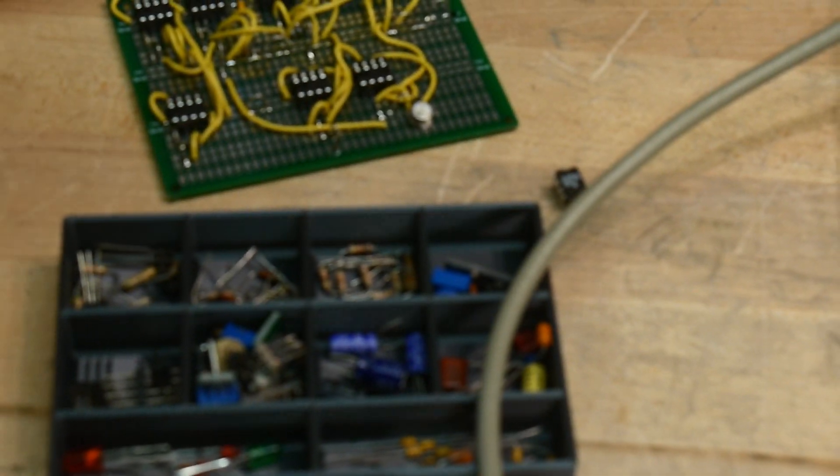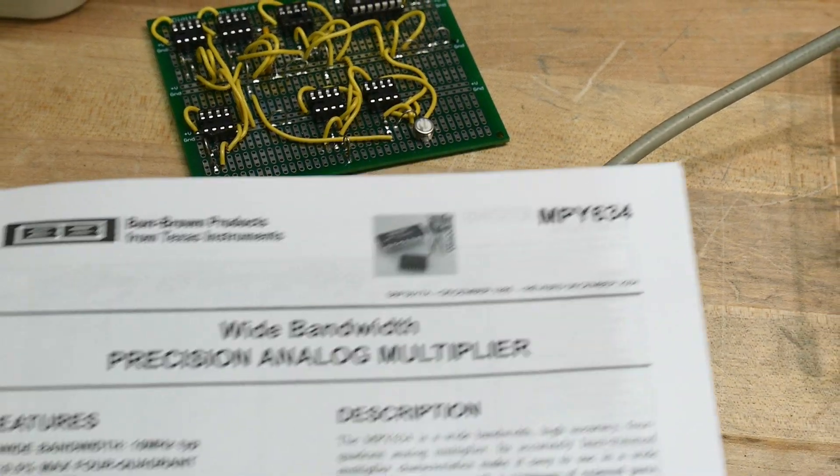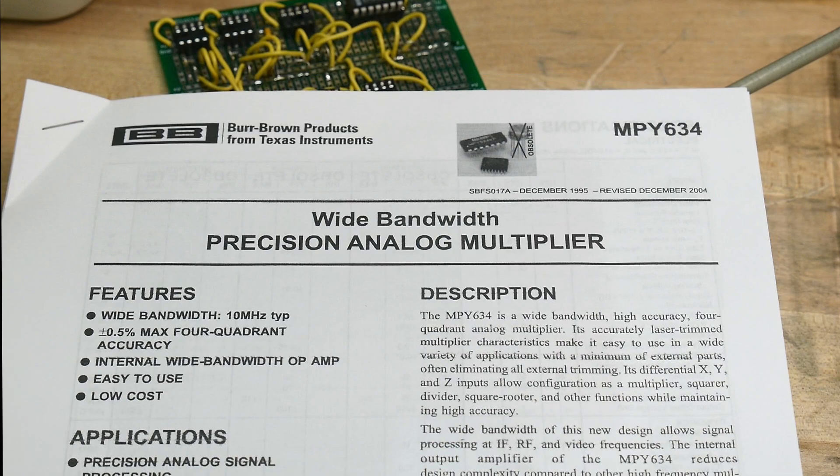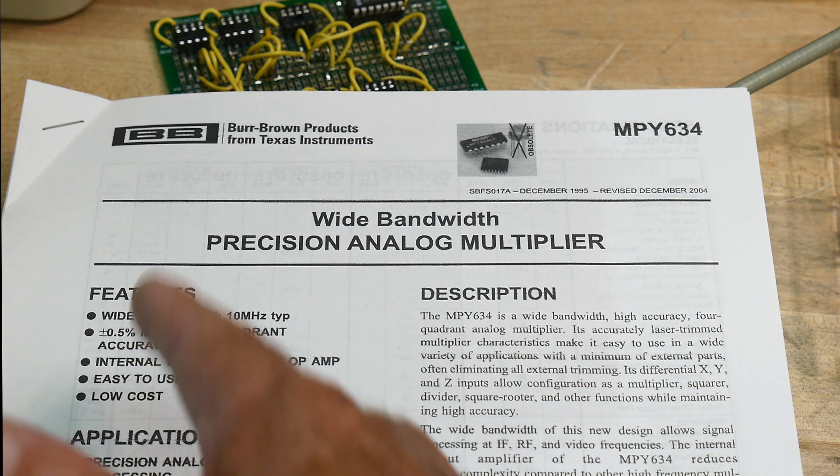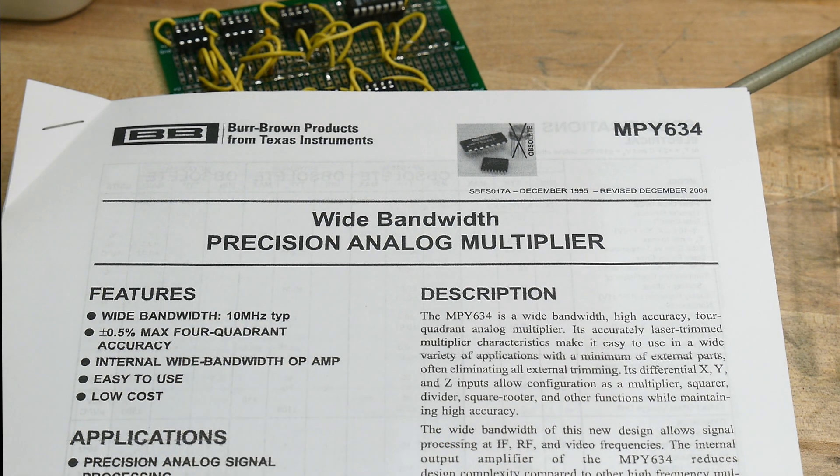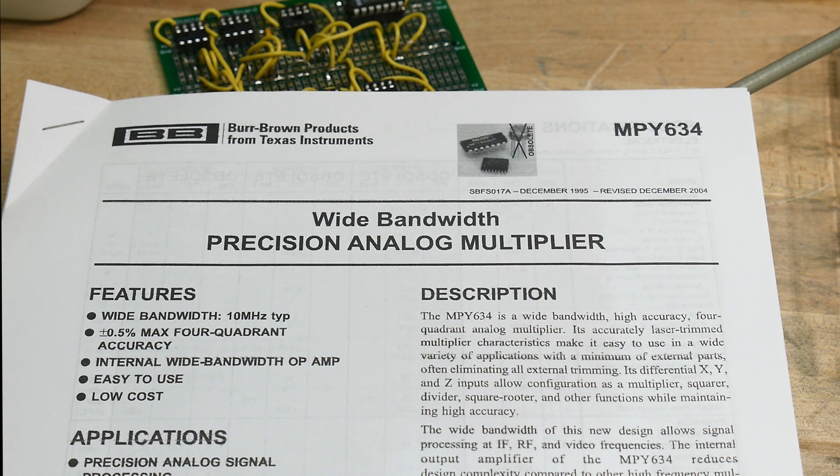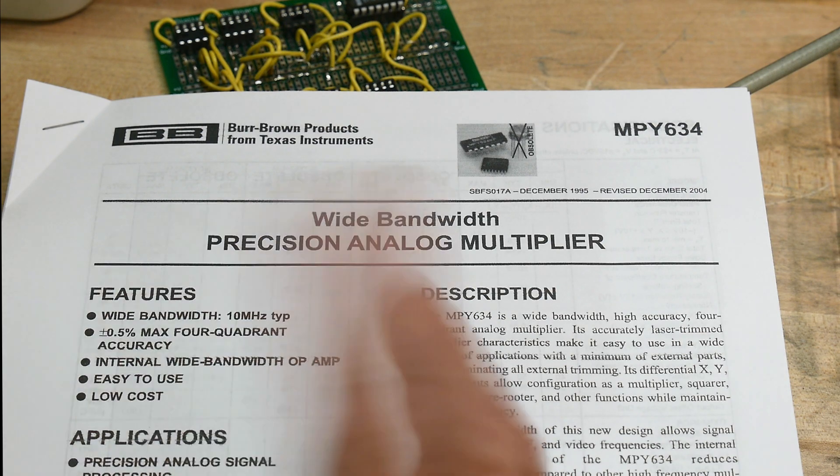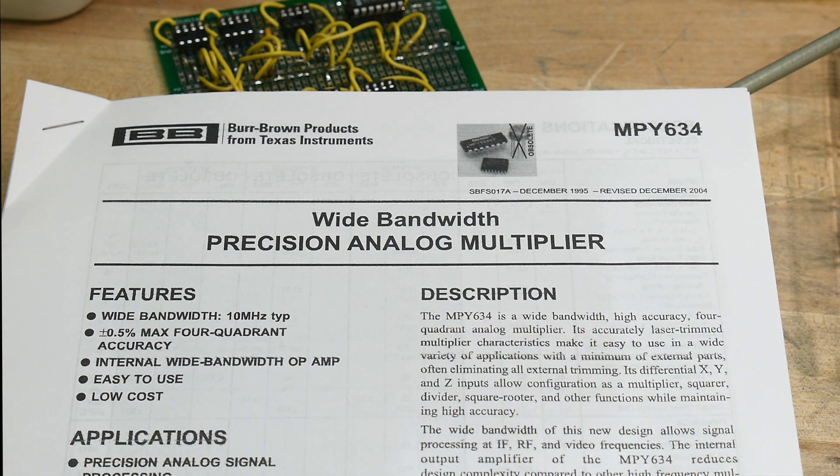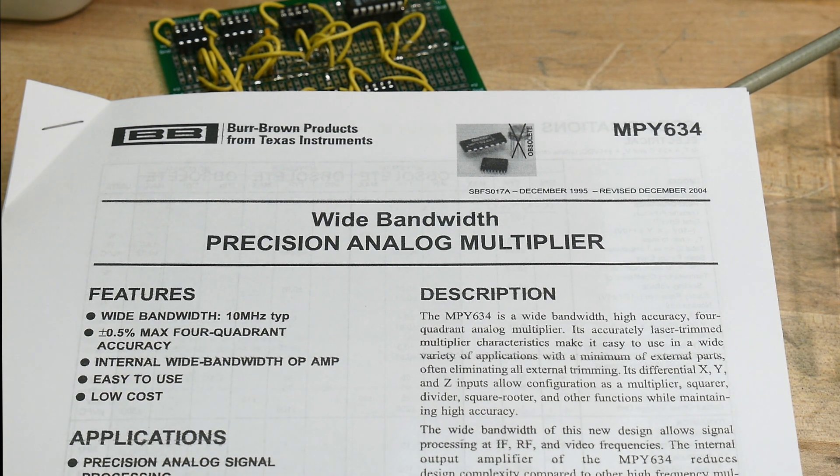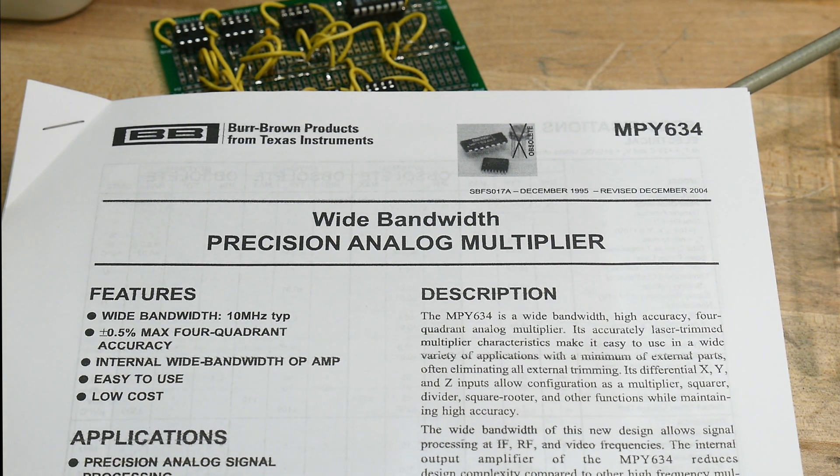But yeah, there you go. Chip of the day is a MPY634. Now it says it's wide bandwidth. It says it goes up to 10 megahertz. So that's pretty cool bandwidth, four quadrant accuracy. So that's minus plus and minus multiplied together. Yeah. And it's low cost. There you go. So go get one.